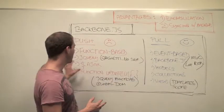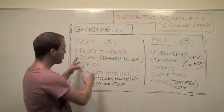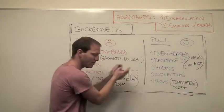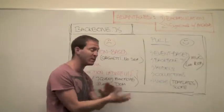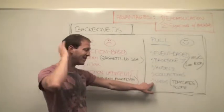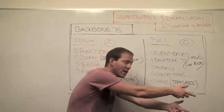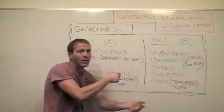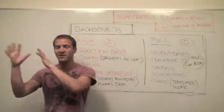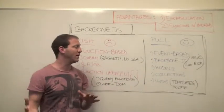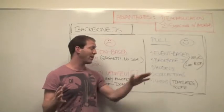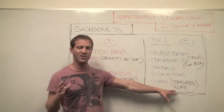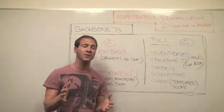So in a sense, rather than pushing inside of a function your updates one at a time into the DOM, these events are listening, and as those changes are made in the data, they're pulling those changes and kind of cascading them into, not really the DOM, but views are scoped to particular elements on the page.